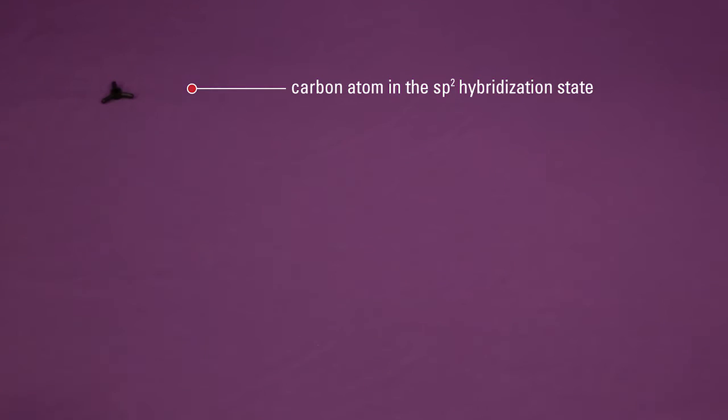The flat black circle with three prongs represents a carbon atom in the sp2 hybridization state. The black ball with four prongs represents a carbon atom in the sp3 hybridization state. The white ball with one prong represents hydrogen.